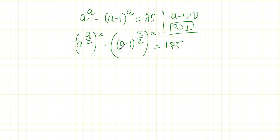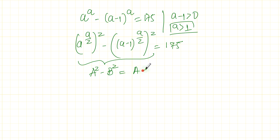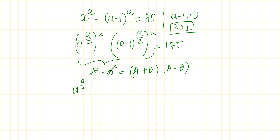Why have I done this? Because here I can apply an identity. This is like something squared minus something squared — we can use the identity a squared minus b squared equals (a plus b)(a minus b). So we can rewrite this as: a to the power of a over 2 plus a minus 1 to the power of a over 2...